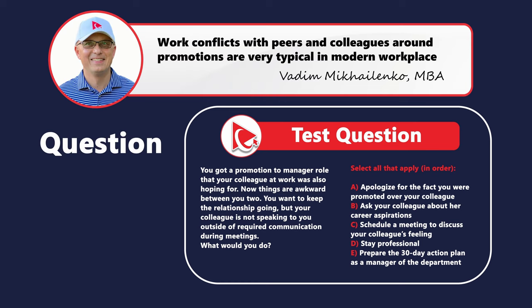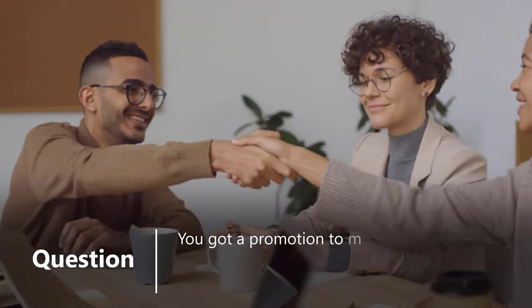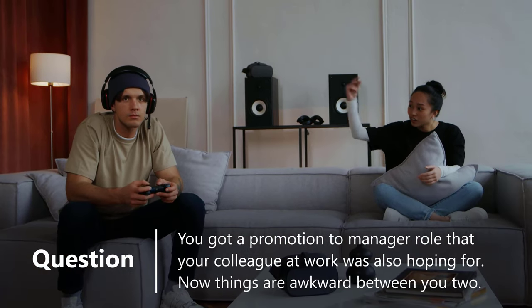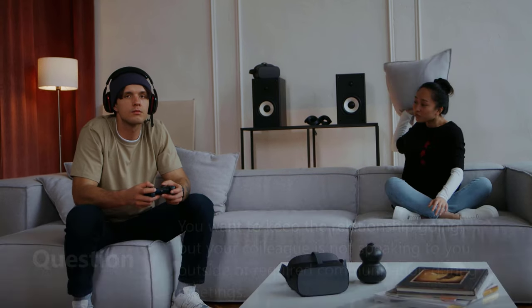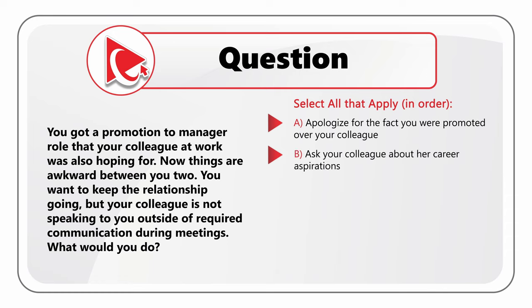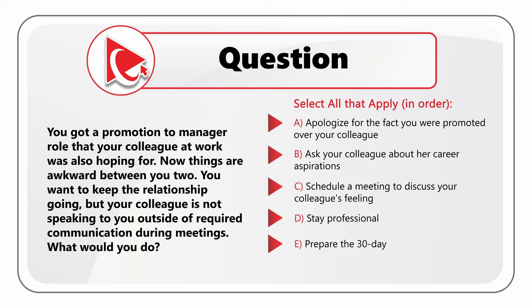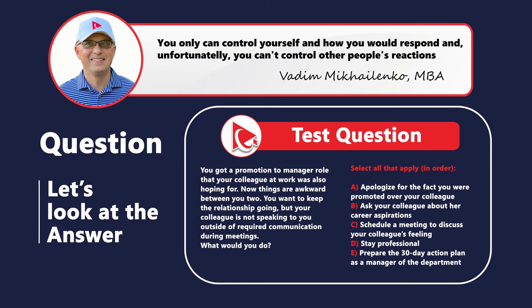You got promoted to a manager role that your colleague was also hoping for. Now things are awkward — your colleague is not speaking to you outside of required team meeting communications. You have five choices (select all that apply in order): A) apologize for being promoted over your colleague; B) ask your colleague about her career aspirations; C) schedule a meeting to discuss your colleague's feelings; D) stay professional; E) prepare a 30-day action plan as manager of the department.